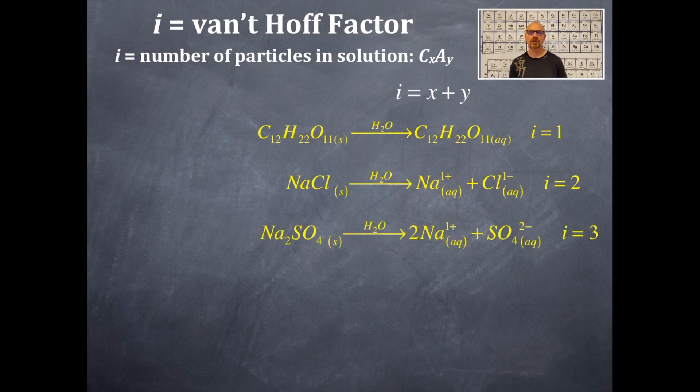All right, let's give another one a try. This is sodium sulfate. So when you take sodium sulfate, which is a cation anion combination, you get two sodium ions and one sulfate ion. So that's two plus one gives a van't Hoff factor of three. All right, hopefully those three examples make sense.